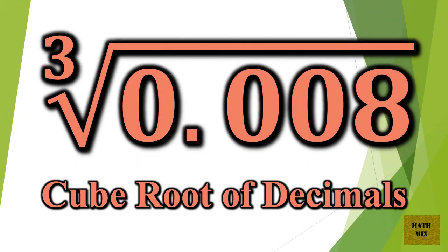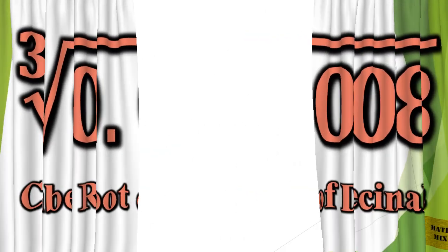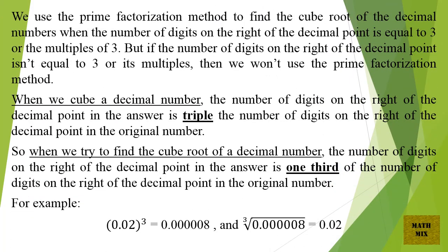The cube root of decimals. We use the prime factorization method to find the cube root of decimal numbers when the number of digits on the right of the decimal point is equal to 3 or multiples of 3. But if the number of digits on the right of the decimal point isn't equal to 3 or its multiples, then we won't use the prime factorization method.